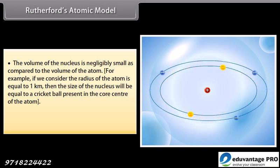For example, if we consider the radius of the atom is equal to 1 km, then the size of the nucleus will be equal to a cricket ball present in the core center of the atom. Hence, most of the space in the atom is empty.